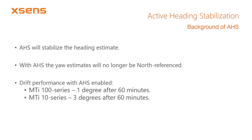Since spatial and temporal magnetic field distortions make it very difficult to determine true north, AHS will stabilize the heading estimate instead. This means that when AHS is enabled with a filter profile that uses the magnetic field as a reference, the yaw estimates will no longer be north-referenced. The yaw zero point will be established as the initial orientation the sensor was in when the orientation filter initialized. The drift in this unreferenced yaw output can be as low as 1 degree after 60 minutes for the MTI-100 series and 3 degrees after 60 minutes for the MTI-10 series.